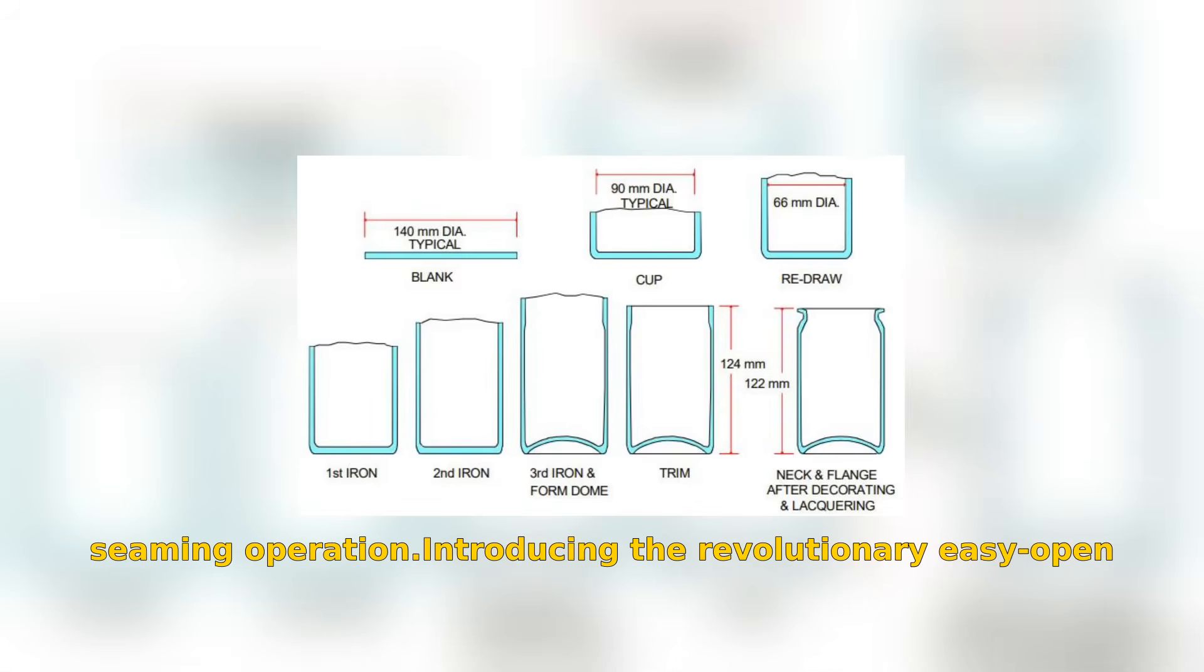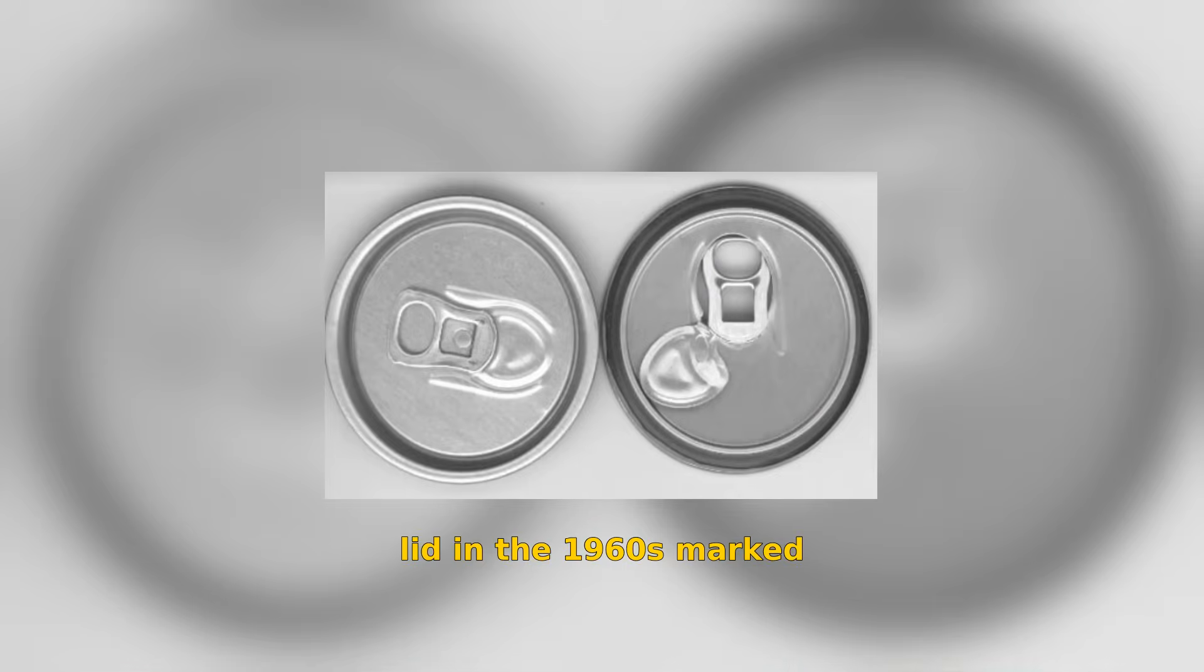Introducing the revolutionary easy-open lid in the 1960s marked a significant advancement in can design, made possible by lacquered coils for easy functionality. The lid comprises 25% of the can's total weight, made from a magnesium-rich alloy that enhances its strength compared to the body.